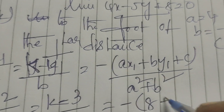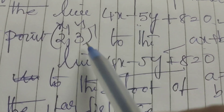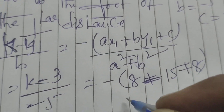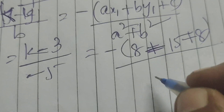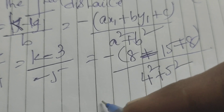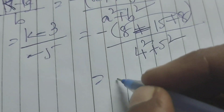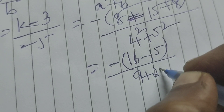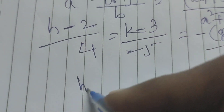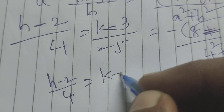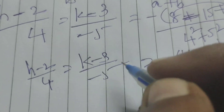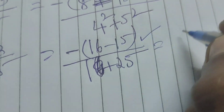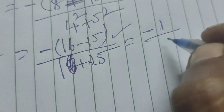Substituting the values: a times x1 is 4 into 2 equals 8, b times y1 is minus 5 into 3 equals minus 15, plus c is plus 8. For a squared plus b squared: 4 squared plus 5 squared equals 16 plus 25. Simplifying: 8 minus 15 plus 8 equals 1, and the denominator is 16 plus 25 equals 41. So we get h minus 2 by 4 equals k minus 3 by minus 5 equals minus 1 by 41.